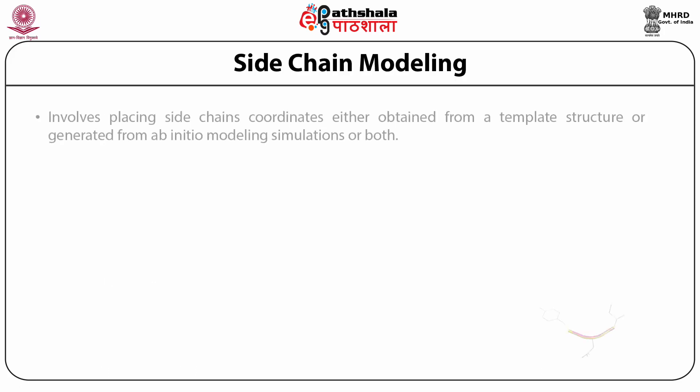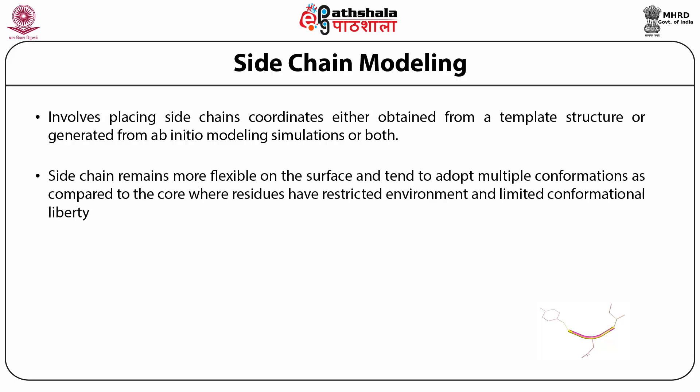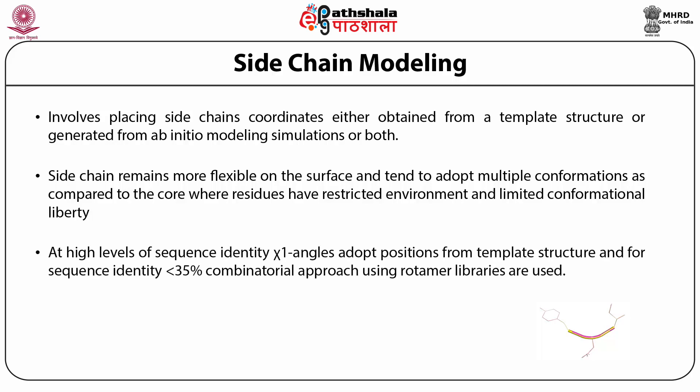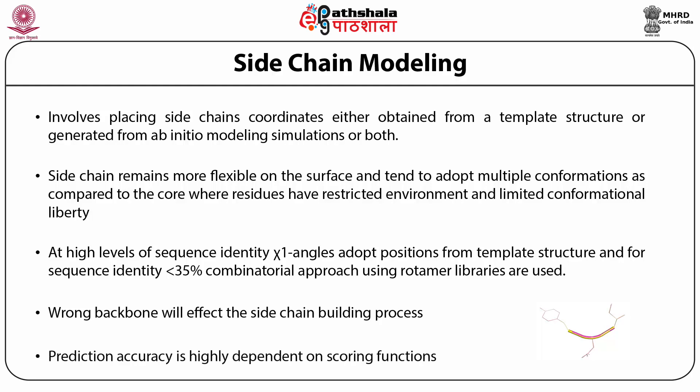Sidechain modeling involves placing sidechain coordinates obtained from a template structure or generated from ab initio modeling simulations, or both. Sidechains remain more flexible on the surface and tend to adopt multiple conformations compared to the core where residues have a restricted environment and limited conformational liberty. At high sequence identity, torsion angles adopt positions from a template structure, and for sequence identity less than 35%, a combinatorial approach using rotamer libraries is used. A wrong backbone will highly affect the sidechain building process, and prediction accuracy is highly dependent on scoring functions.